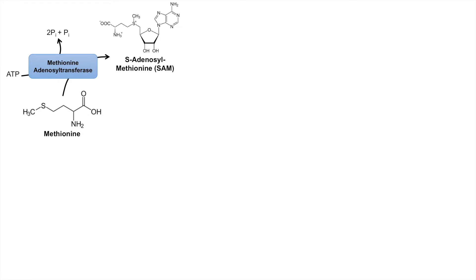So methionine adenosyl transferase takes the adenosine group from ATP and adds it to methionine to form S-adenosylmethionine, or SAM. Here is the adenosine group right here. This adenosine group gets added to the sulfur of methionine, making the sulfur and methyl bond unstable, allowing SAM to become a methyl donor.